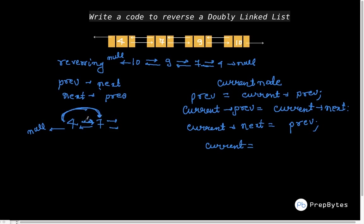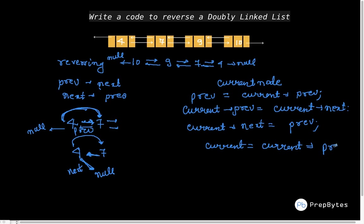After redrawing the link: the next of 4 is now null and the prev of 4 is pointing to 7. I update current to point to current.prev. This same operation applies to all nodes, so we run a loop until current becomes null.